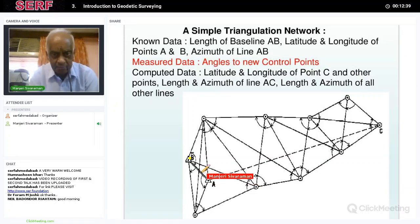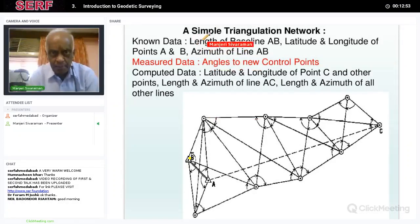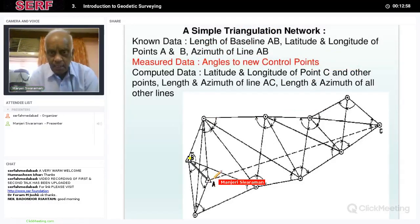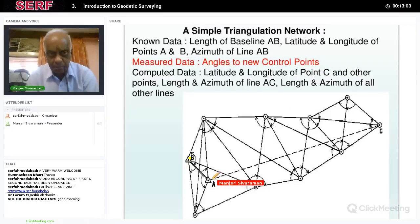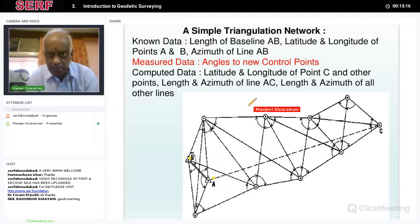Using a chain, this baseline distance is measured. Also, the azimuth of line AB — that is, the direction from north — is measured. The known basic data is the length of the baseline AB. At A, astronomical latitude and longitude are measured as explained previously, and the azimuth of line AB is also determined. So you have the orientation of line AB, and the latitude and longitude of both A and B.